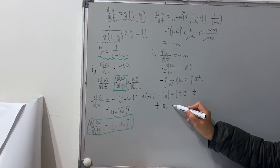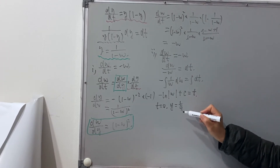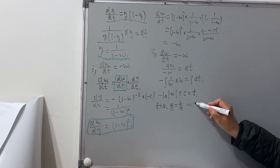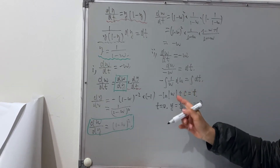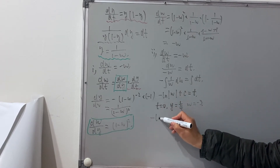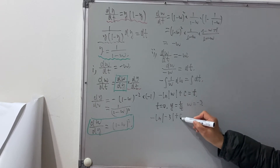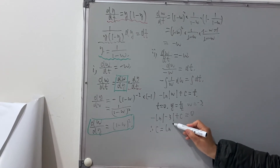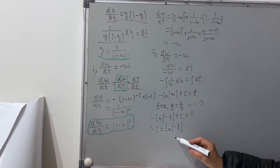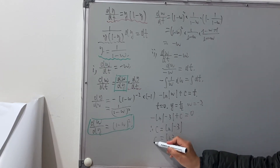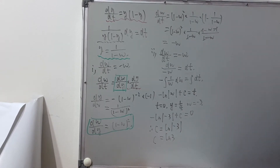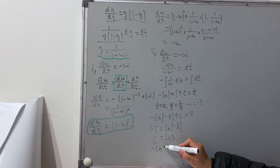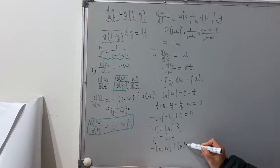With the initial condition, when t equals 0, y equals 1/4. Using the substitution y = 1/(1-w), putting 1/4 into y gives w equals negative 3. Substituting in: negative log|negative 3| plus c equals 0, so c equals log 3.